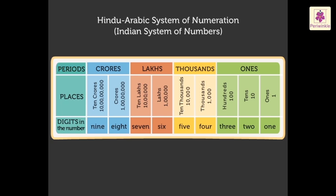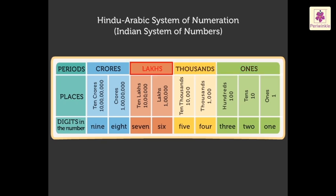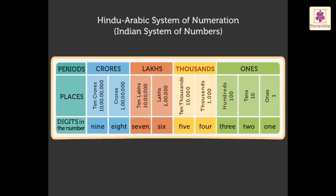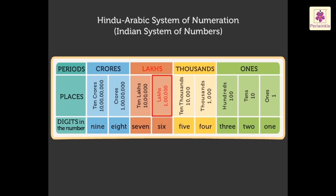The table shows the periods, the places, and the digits. The six and seven digit numbers are placed in the ones period, the thousands period, and the lakhs period. The eight and nine digit numbers are placed in the ones period, the thousands period, the lakhs period, and the crores period. The ones period consists of ones, tens, and hundreds. The thousands period comprises thousands and ten thousands. The lakhs period comprises lakhs and ten lakhs. The crores period also has two places: crores and ten crores.